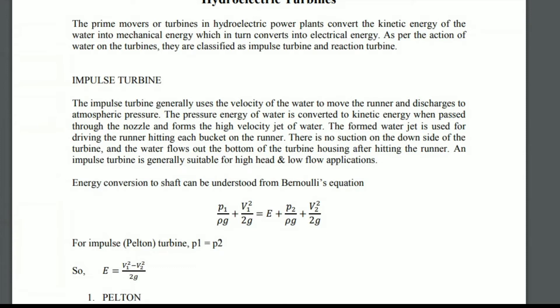The energy conversion to shaft can be understood from the Bernoulli equation. In the case of the impulse turbine, P1 and P2 — the energy is actually the difference between the energy at the inlet side of the turbine and the outlet side of the turbine.